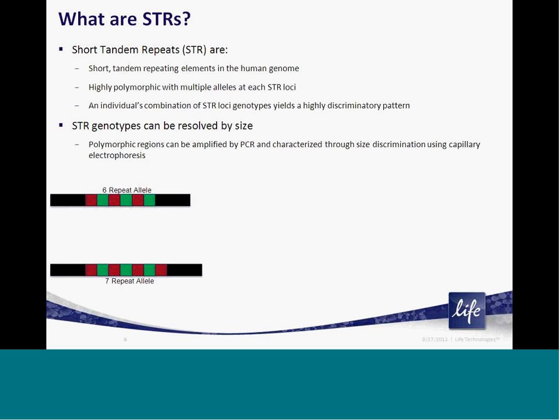The target Authentifiler loci are based on STR chemistry. For those of you who are not familiar with STRs, or short tandem repeats, they are small repeating elements of various nucleotide lengths that are present in the human genome and commonly used as a gold standard method for human identification. Each genetic loci is highly polymorphic and can contain various different alleles at each loci that differ by the number of repeating elements present.